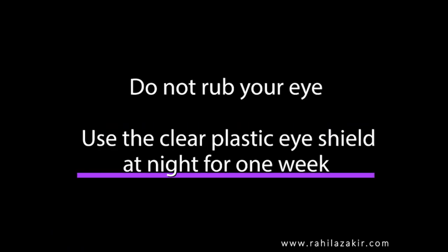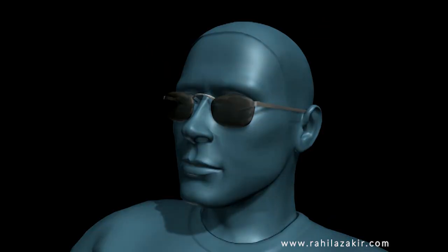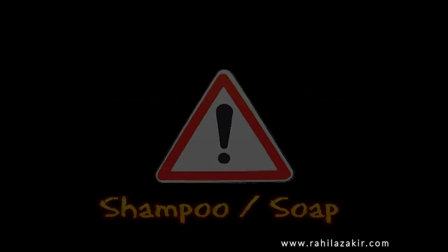Do not rub your eye. To reduce the risk of accidentally rubbing your eye in your sleep, you will be given a clear plastic shield to wear at night for the first week. A direct shock can reopen the cataract wound, so I recommend you avoid sports for a few weeks after surgery. Be careful not to get shampoo or soap in your eye, and do not use swimming pools for a few weeks after surgery.